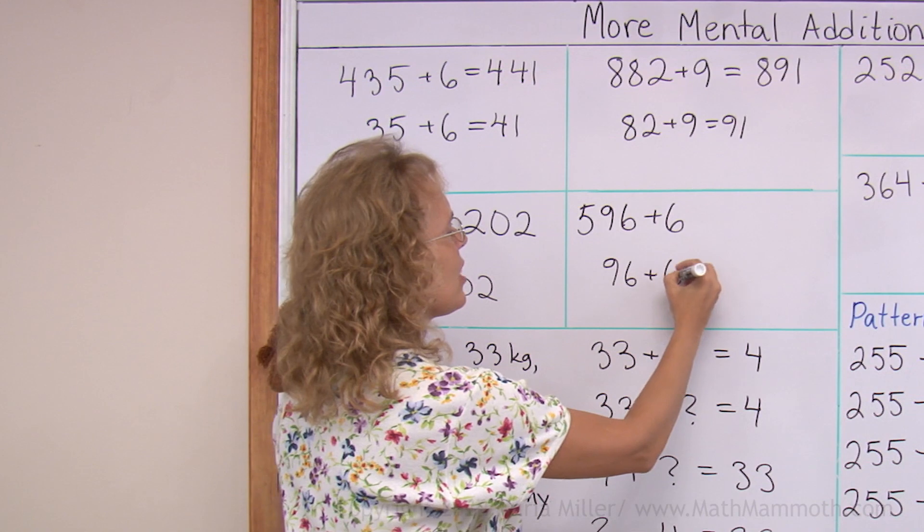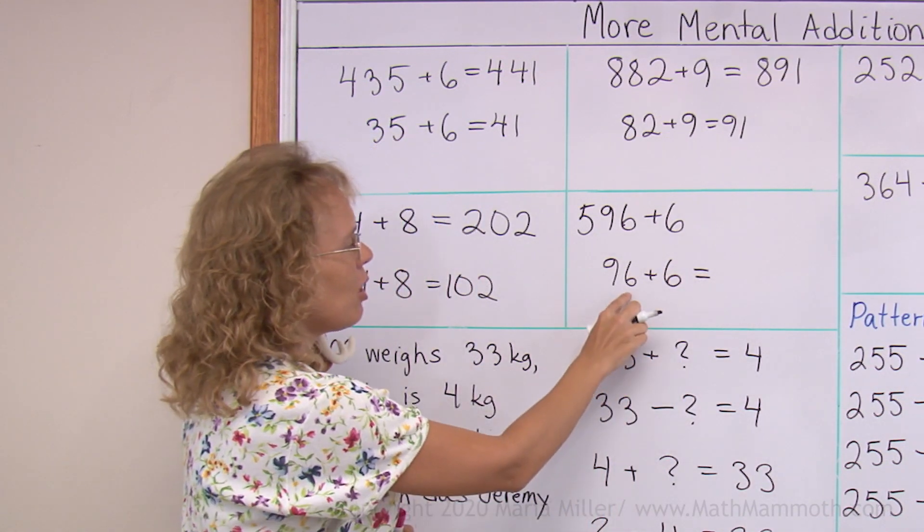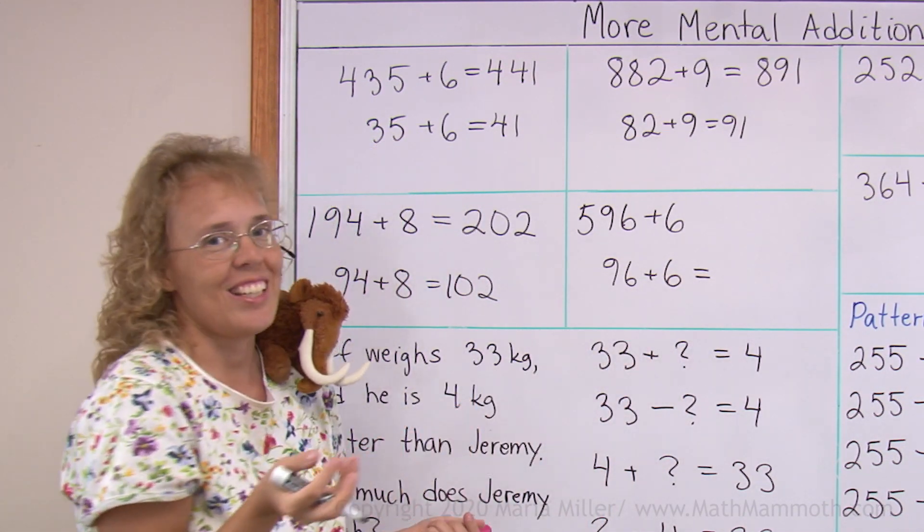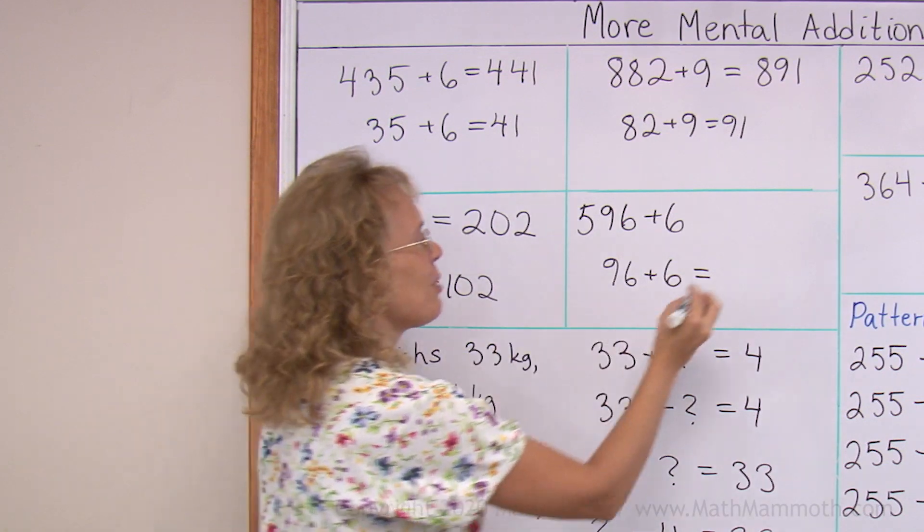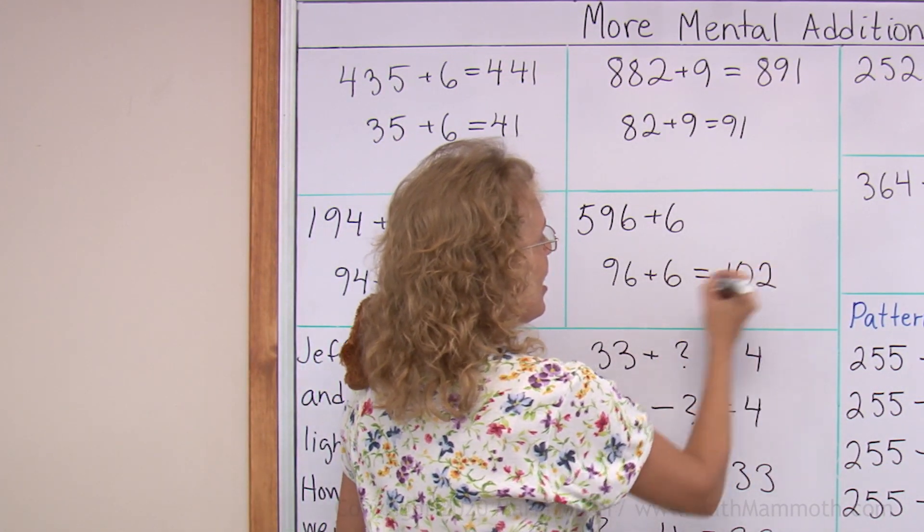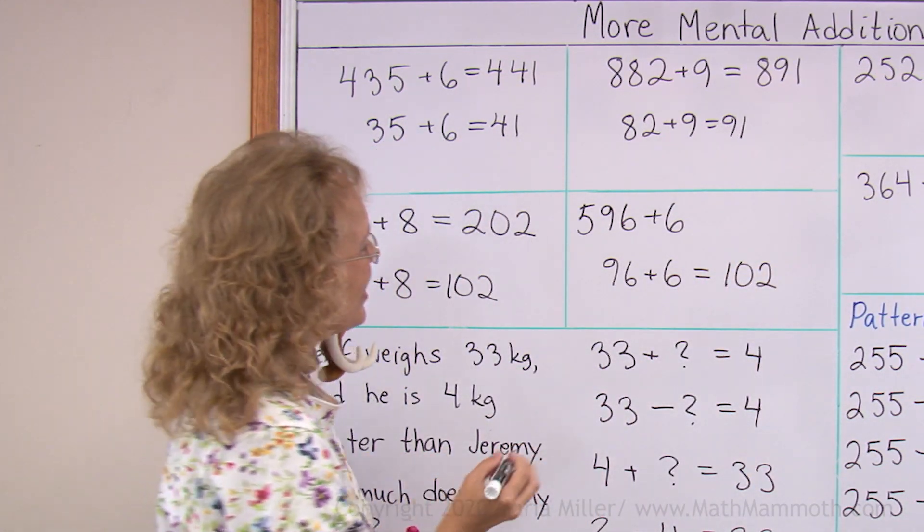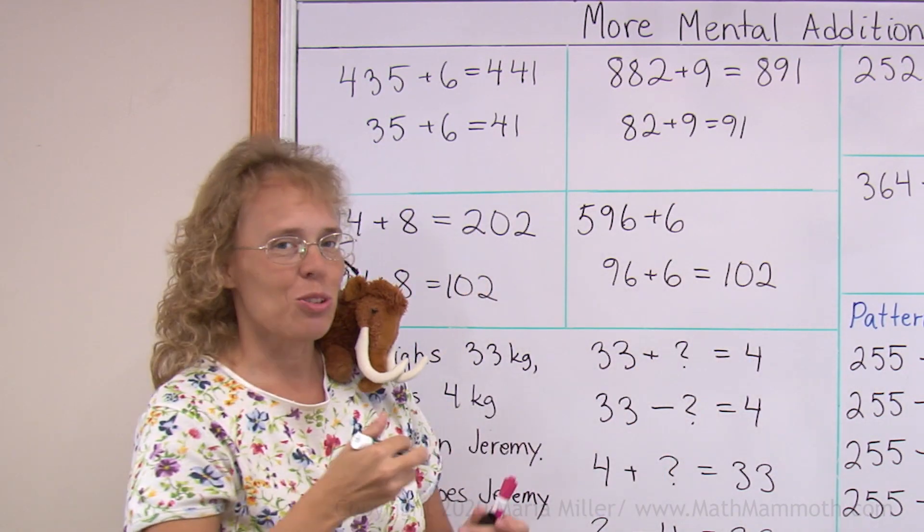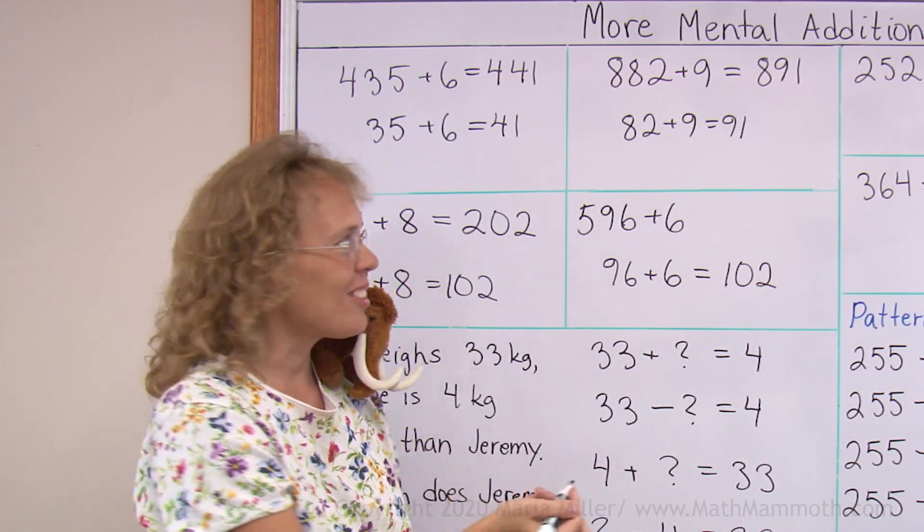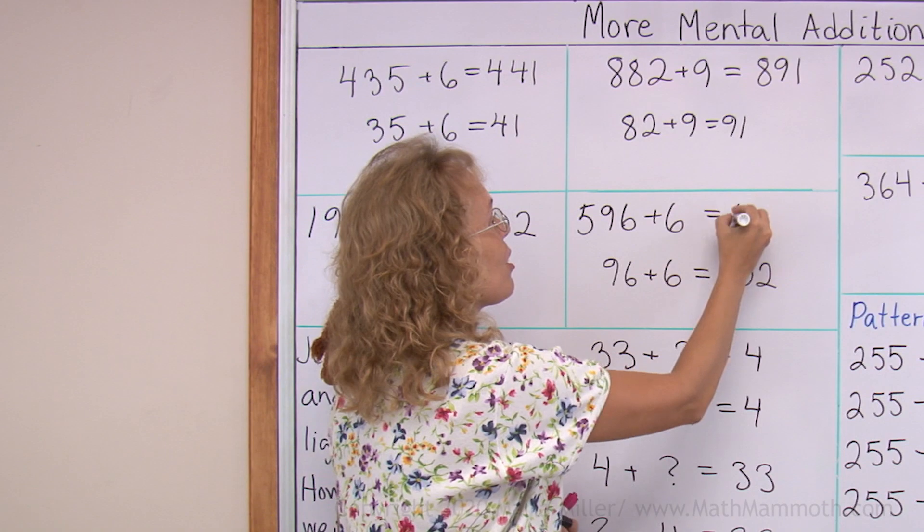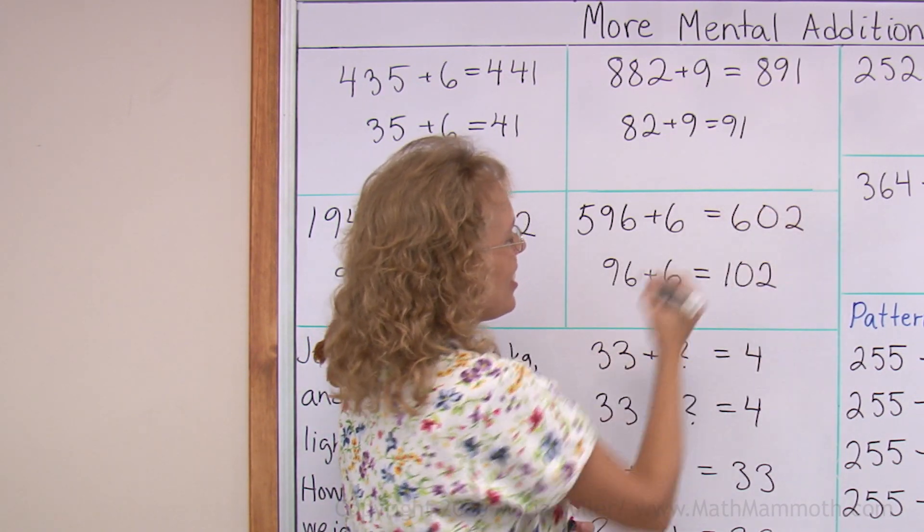596 plus 6. Let's solve that first. Over here, 6 and 6 is 12. Again, okay? So actually I get the same as here. Oops. I should have chosen different numbers, right? So again, we have the situation that it goes 2 over the 100. And this one also is going to be 2 over the next 100. 602.